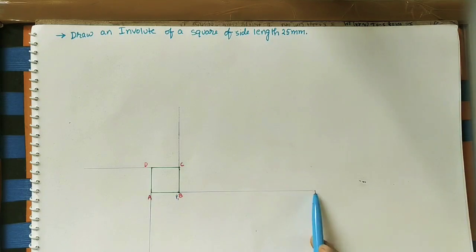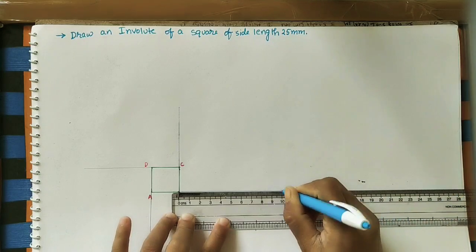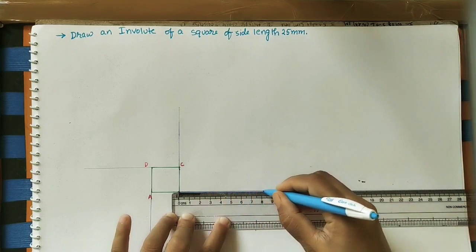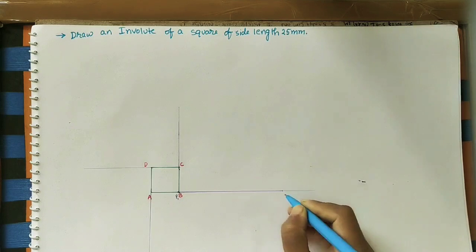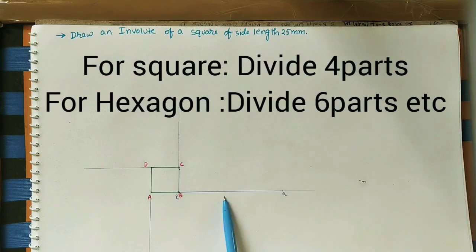From P, mark 10 centimeter on this line with the help of a scale. Mark 10 centimeter and label this endpoint as Q. Now divide this peripheral length PQ into four equal divisions.